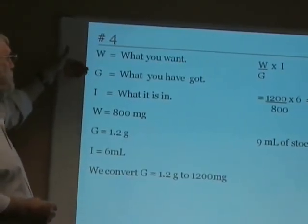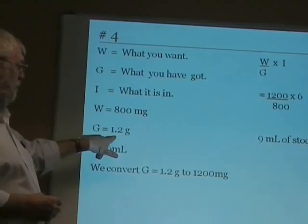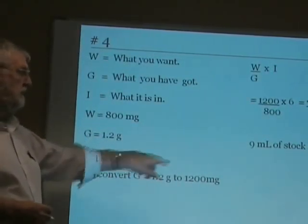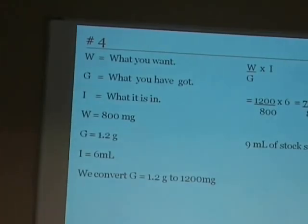Again, the order: want, got, in. Here I had to turn 1.2 g into mg. 1.2 g is 1200 mg when multiplied by 1000.